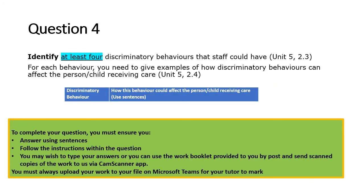Question four asks you to identify at least four discriminatory behaviours that staff could have. For each behaviour, give examples of how the discriminatory behaviour can affect the person or child receiving care. Write the behaviour on the left-hand side and how it could affect the person on the right-hand side, writing a sentence to explain that.